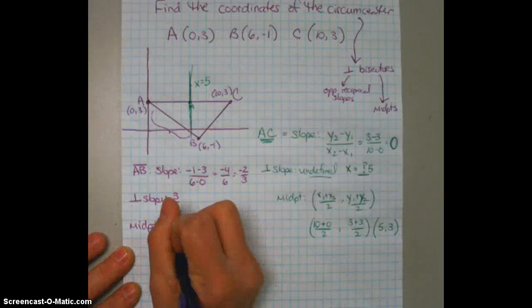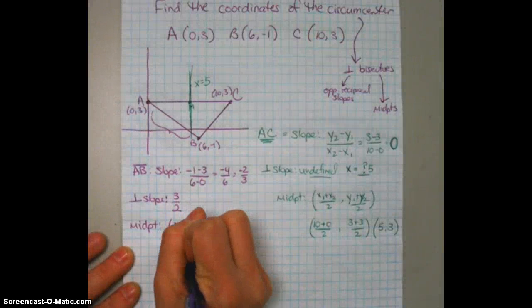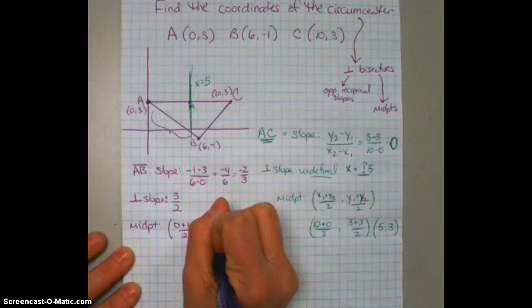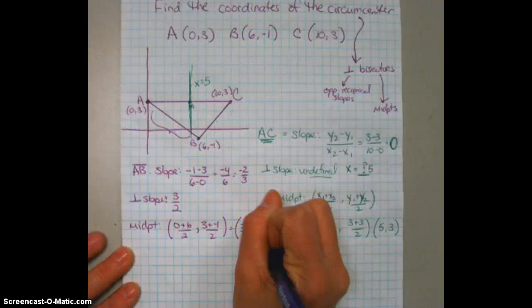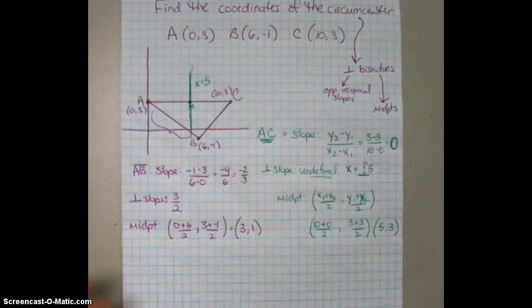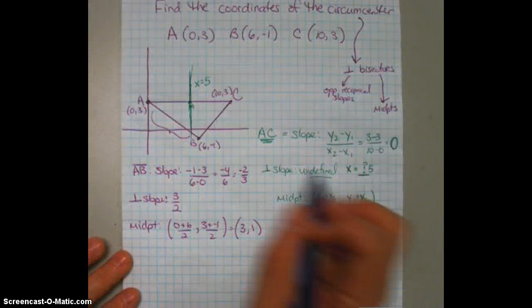So the midpoint is going to be 0 plus 6 over 2, 3 plus negative 1 over 2. And that's going to equal (3, 1). So the midpoint is at (3, 1).